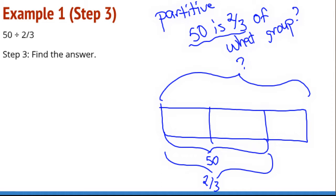Looking at the answer here, I can see that on my tape diagram, 50 has been divided into two units here, two sections. And 50 divided by two is 25. So each of the units on my tape diagram is going to be equal to 25. So my total is going to be 75. 50 is two-thirds of 75.